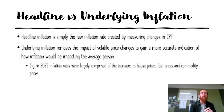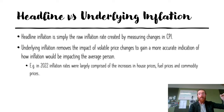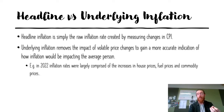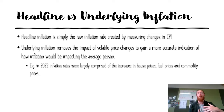Headline inflation is simply the raw inflation rate created by measuring changes in CPI — the exact raw data based on those price changes. Underlying or core inflation, however, removes the impact of any volatile price changes to gain a more accurate indication of how inflation is impacting the average person. For example, in 2022 inflation rates were largely comprised of increases in house prices, fuel prices, and commodity prices. Because these changes don't affect everyone equally — like a meat price increase doesn't impact a vegetarian — the RBA removes anything too extreme to give an underlying rate that more accurately reflects impact on the average person.